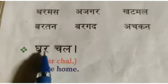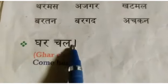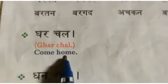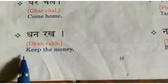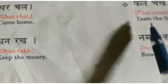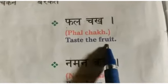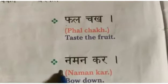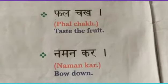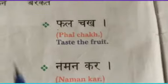Sentence: Ghar chal — come home. Dhan rakh — keep the money. Fal chakh — taste the fruit. Namaskar — bow down.